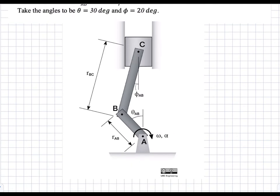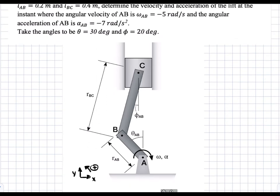I will draw in the coordinate system. So x will be positive to the right, y will be positive up, and a positive rotation is counterclockwise. Because of this convention, the z-direction will follow it being into the page.